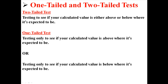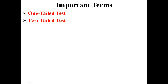Remember: for two-tailed tests, you're testing to see if your calculated value is either above or below where it's expected to be. A one-tailed test is testing only to see if your calculated value is above or below where it's expected to be in one specific direction. Those are one-tailed and two-tailed tests — it just specifies the direction of the test you're performing.